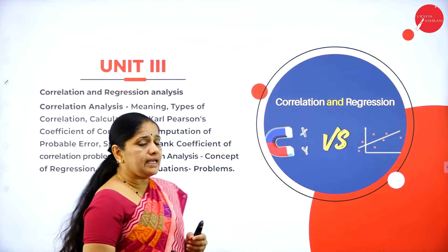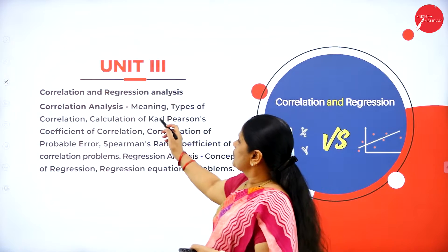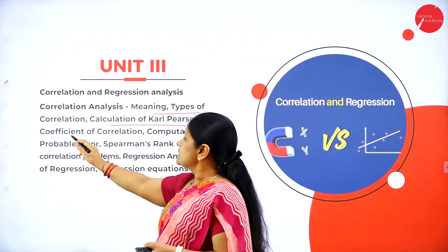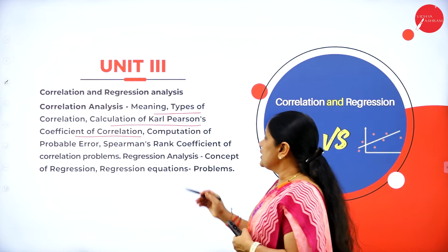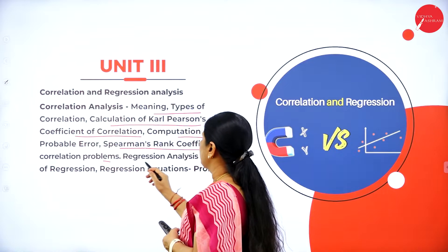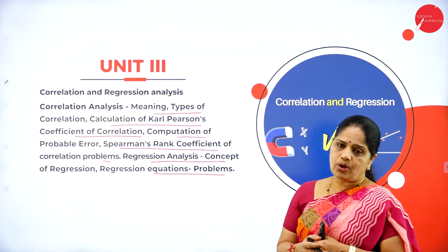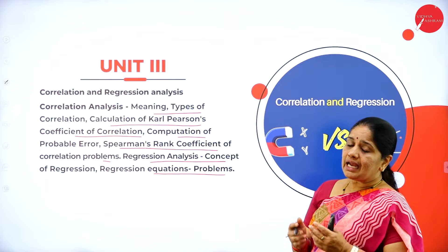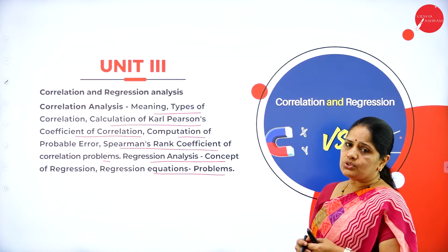Under unit 3, we have correlation and regression analysis. What is the meaning of correlation, different types of correlation, calculation of Carl Pearson's coefficient of correlation, computation of probable error, Spearman's rank coefficient of correlation problems, regression analysis and regression equations and problems. In this correlation and regression, we will be studying about the meaning and different types of correlation and regression problems based on these two concepts.